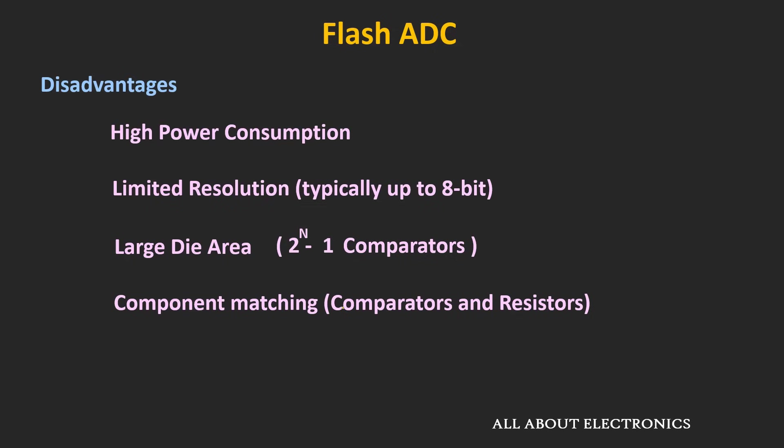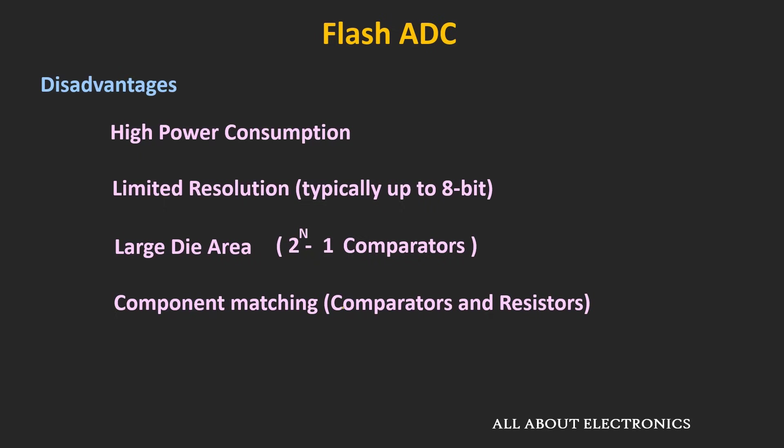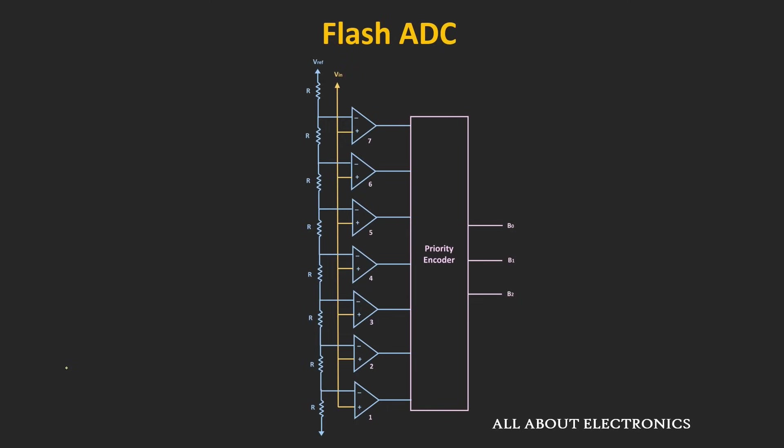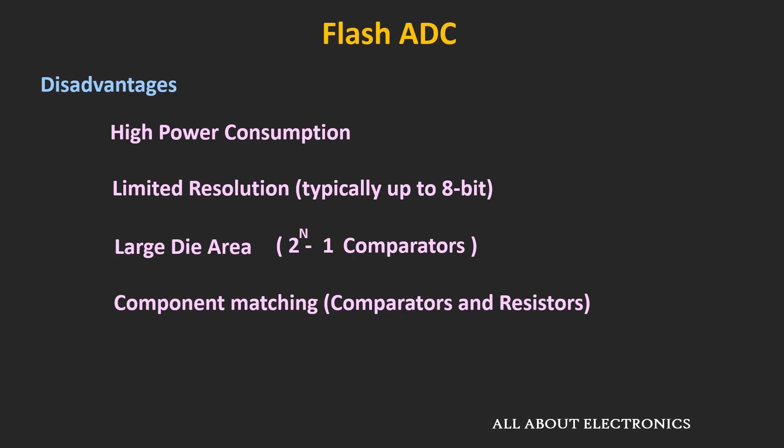In this ADC, for an n-bit conversion, it requires a total of 2 to the power n minus 1 comparators. That means for an 8-bit ADC, it requires 255 comparators. As the number of bits increases, the die size will increase exponentially, and the cost of this ADC will also increase. Apart from that, to provide accurate reference voltages to the comparators, the resistors in the voltage divider should match accurately, and as the number of bits increases, the required accuracy of the resistors will also increase. These are the key limitations of this Flash ADC.